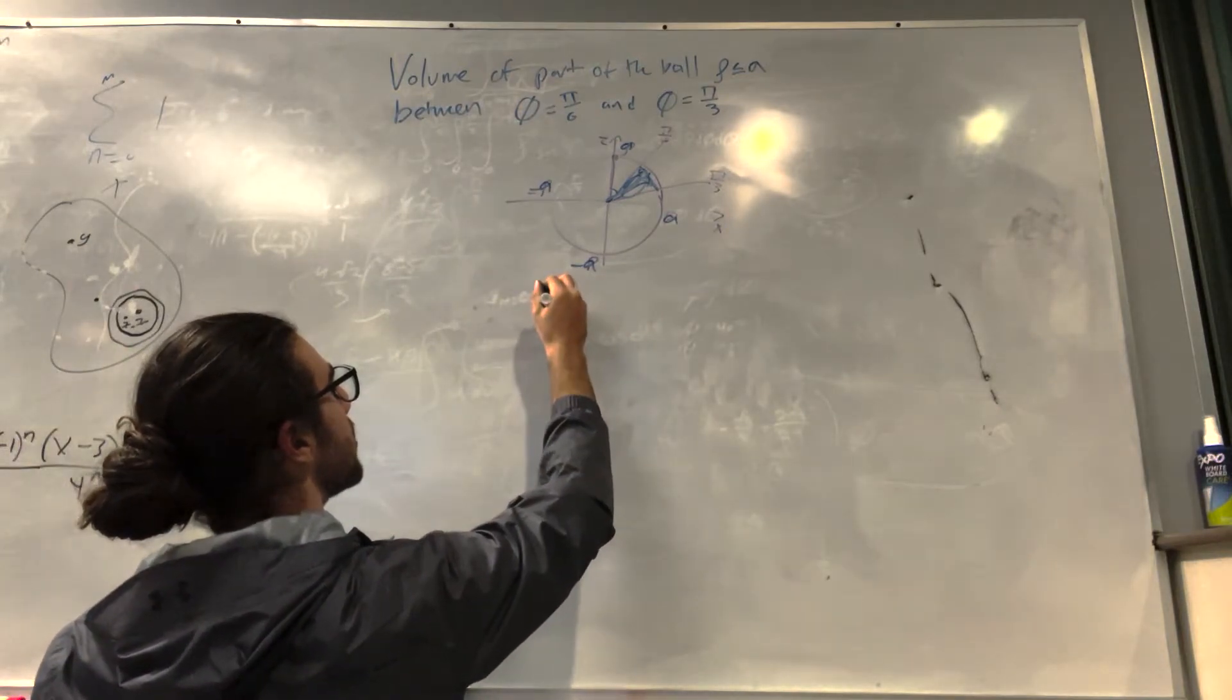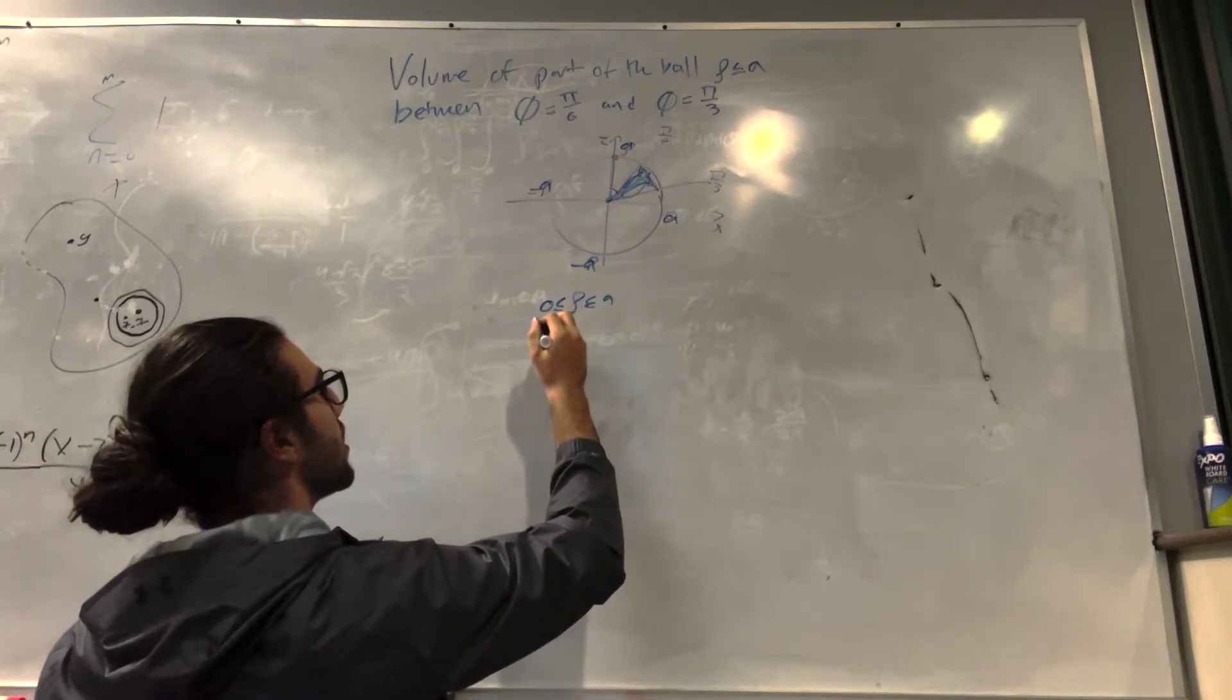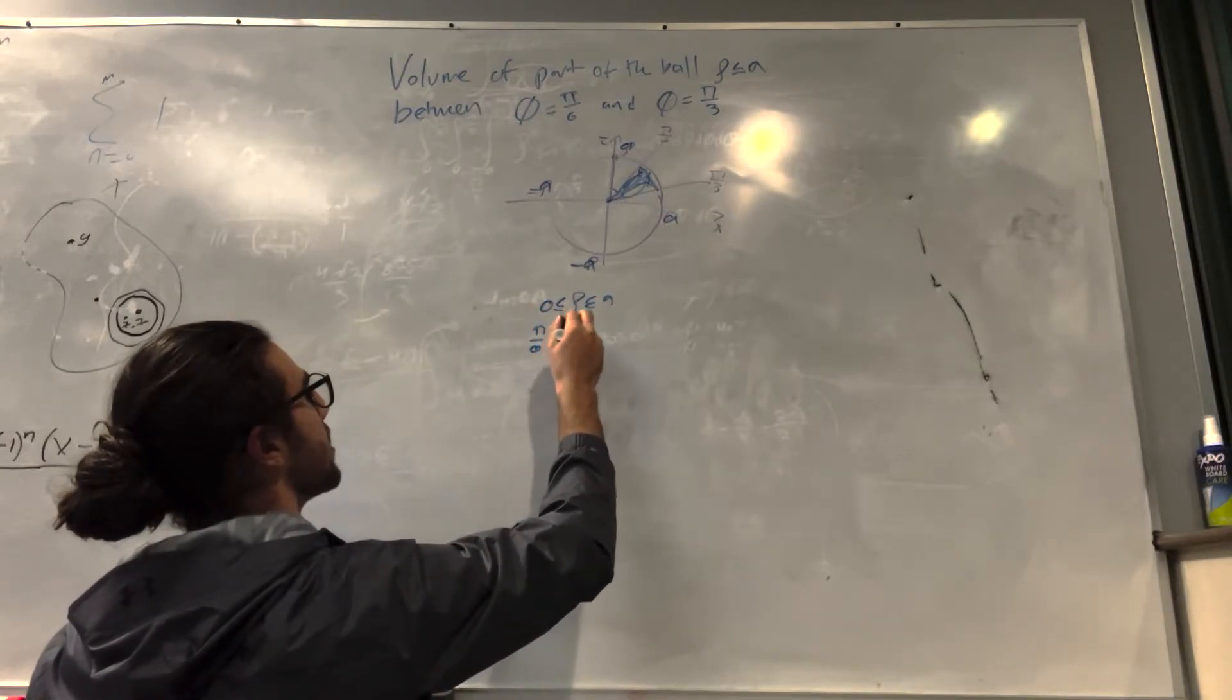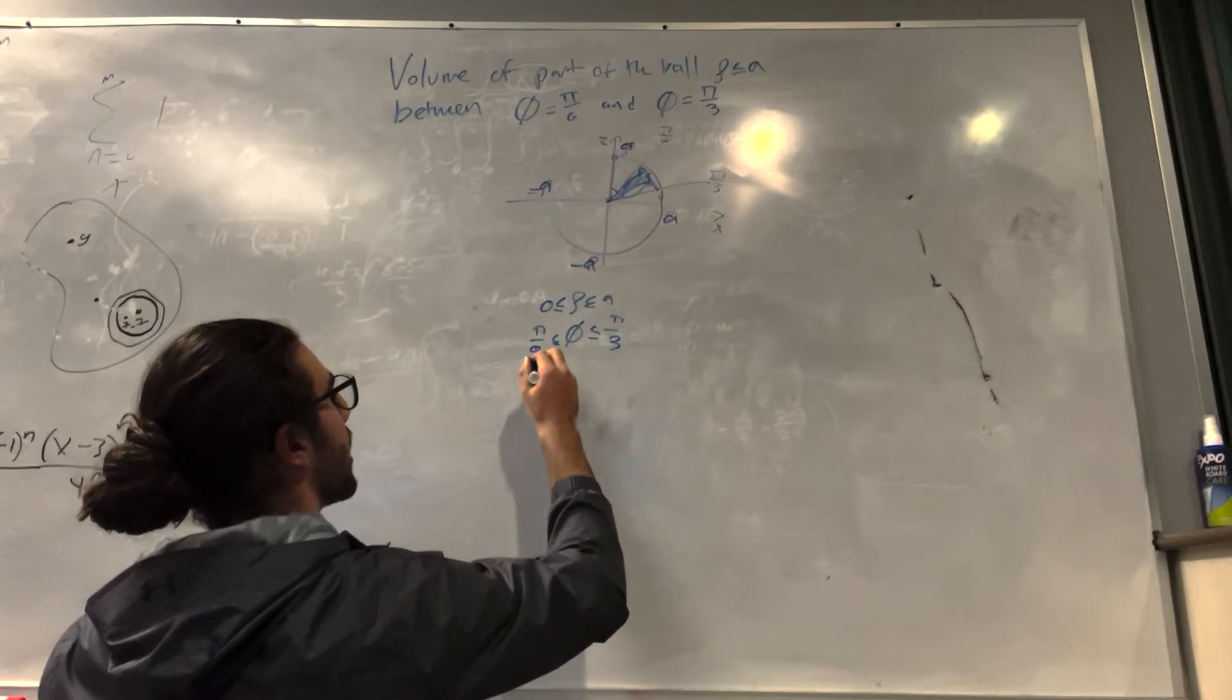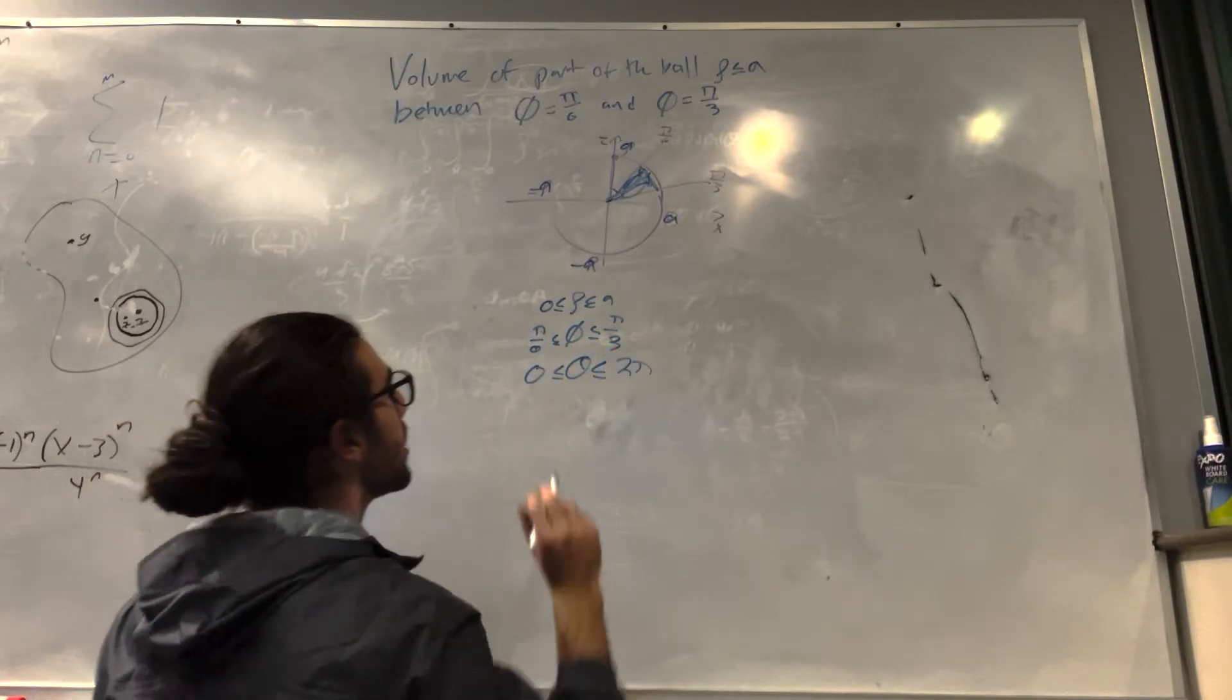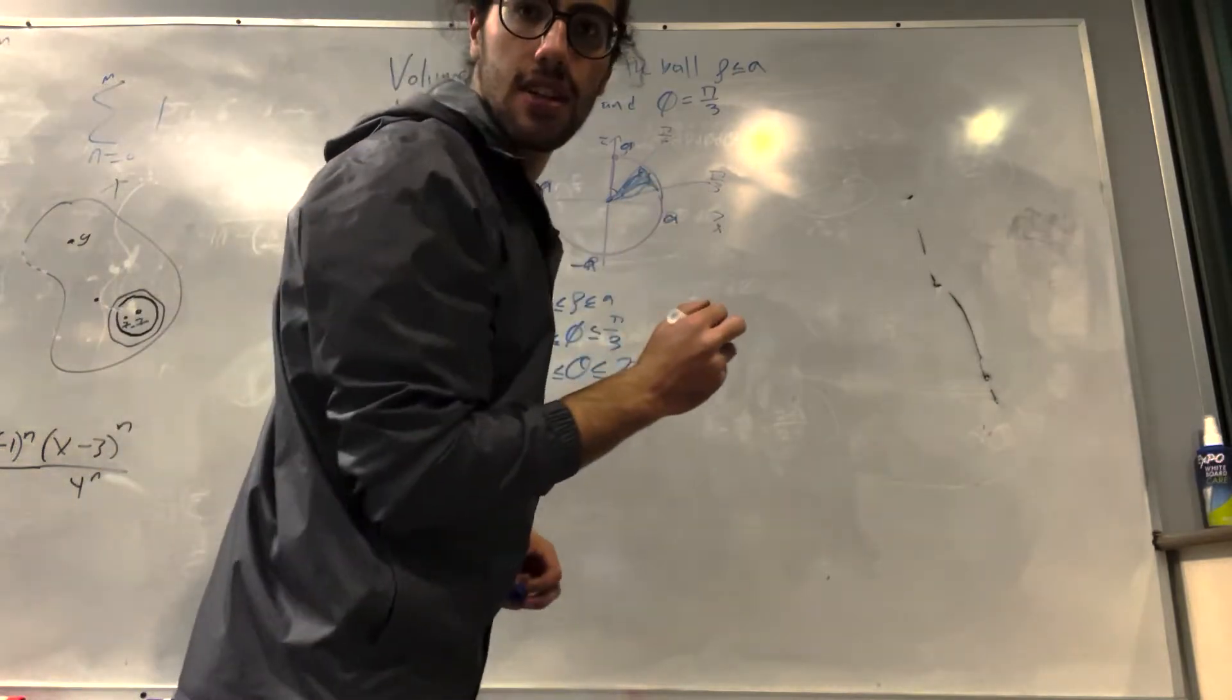So we have 0 is less than rho is less than a. So then we know what phi goes from. Phi goes from pi over 6 to pi over 3. And theta, because it's a full rotation around the z axis, it goes 0 to 2 pi. And from this information, we can set up our nice integral, which I will do over here.